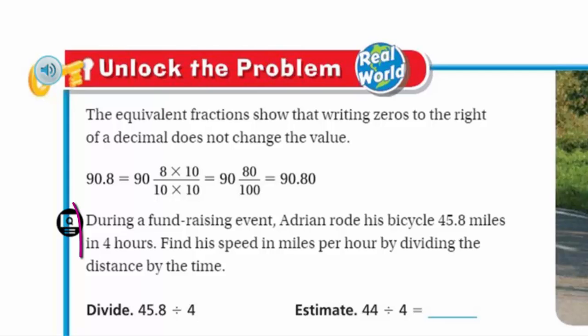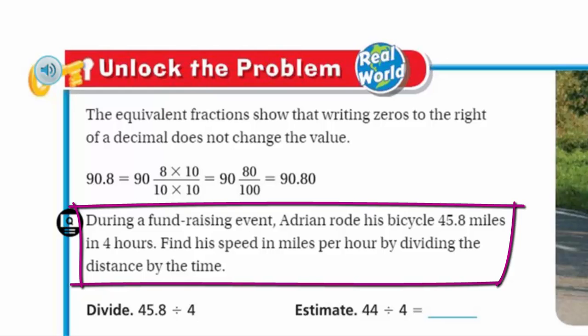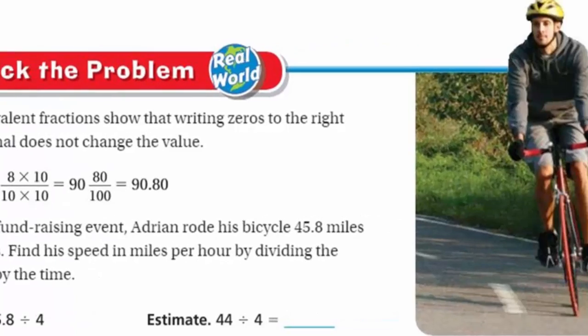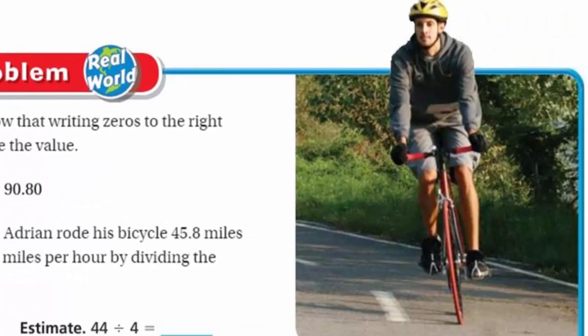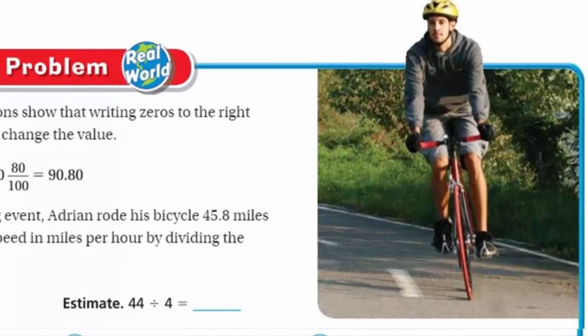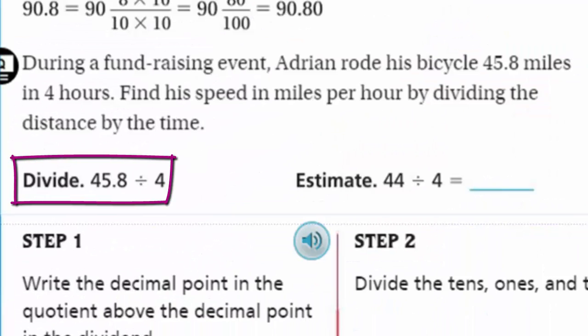Now to the problem. During a fundraising event, Adrian rode his bicycle 45 and 8 tenths miles in 4 hours. Find his speed in miles per hour by dividing the distance by the time. That's a famous formula. Our estimate: we round 45.8 to 44, which is compatible with our divisor 4, giving an estimate of 11.